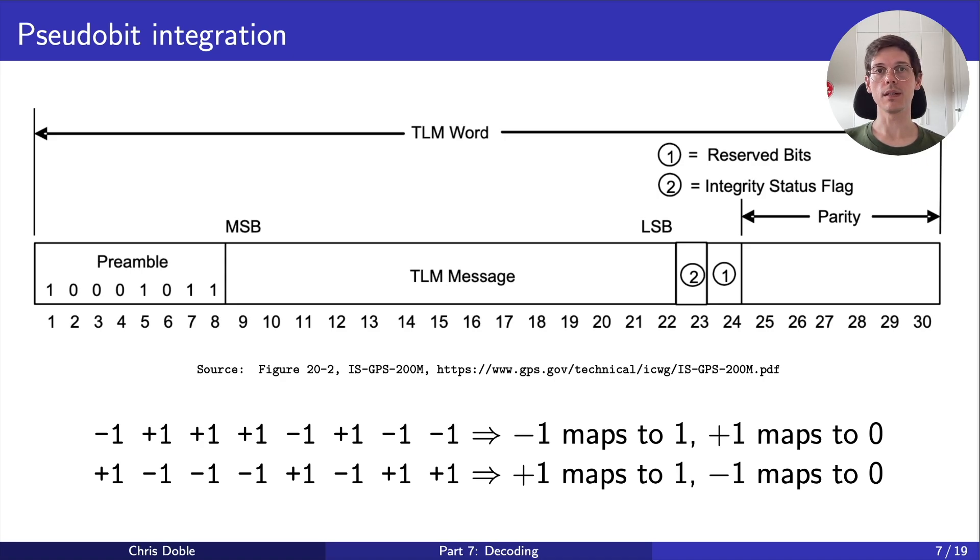Not only does this process tell us the bit phase, but it also tells us the boundaries between different subframes. That means we can now group each 300 bits as they arrive, and send them off to be decoded as a subframe.